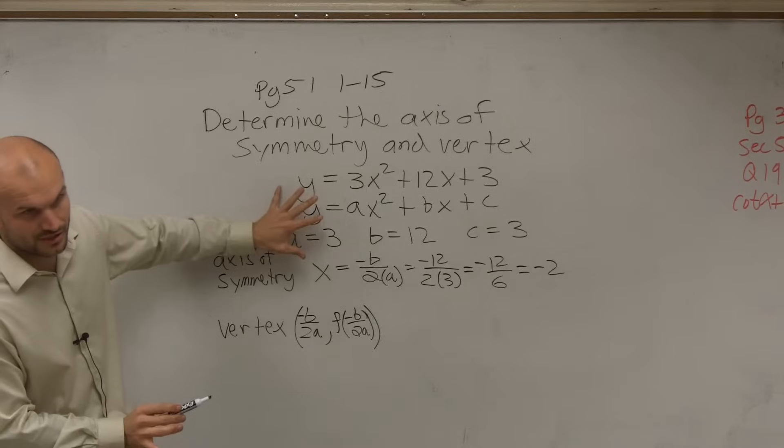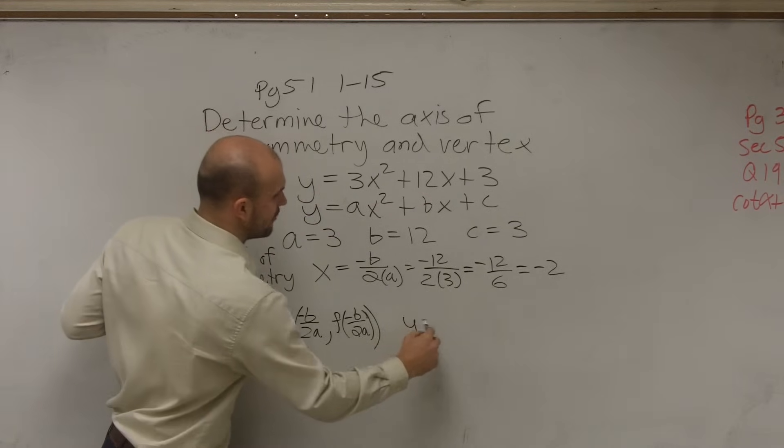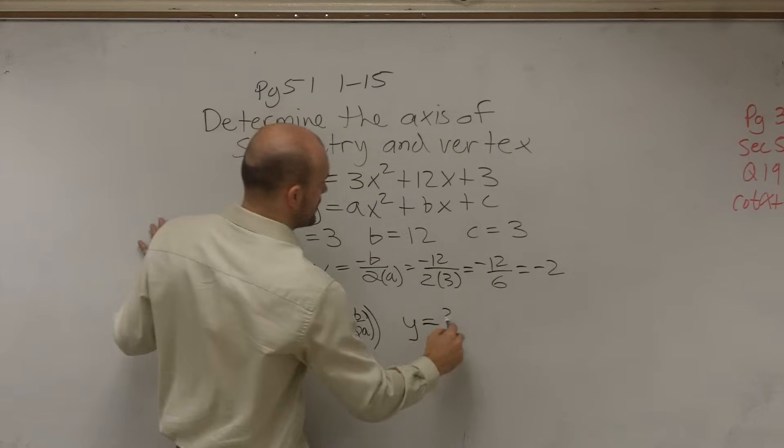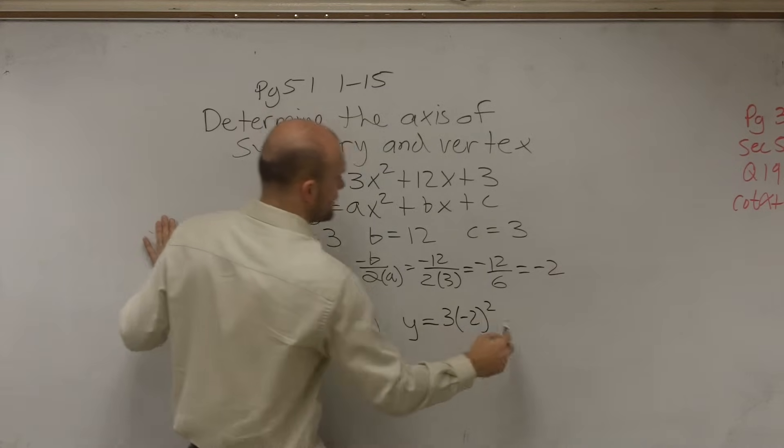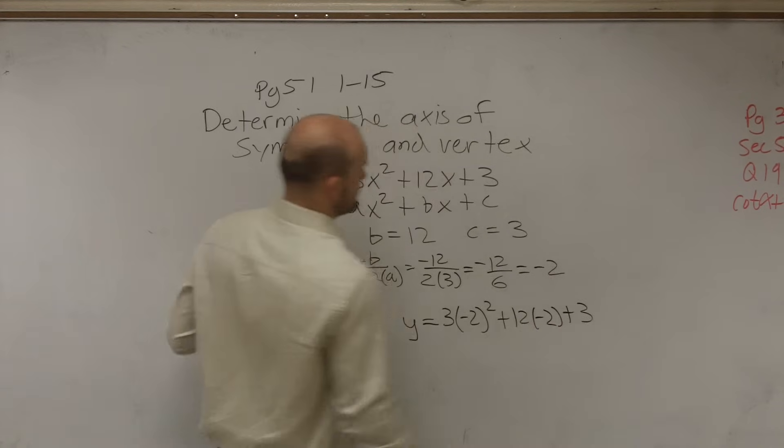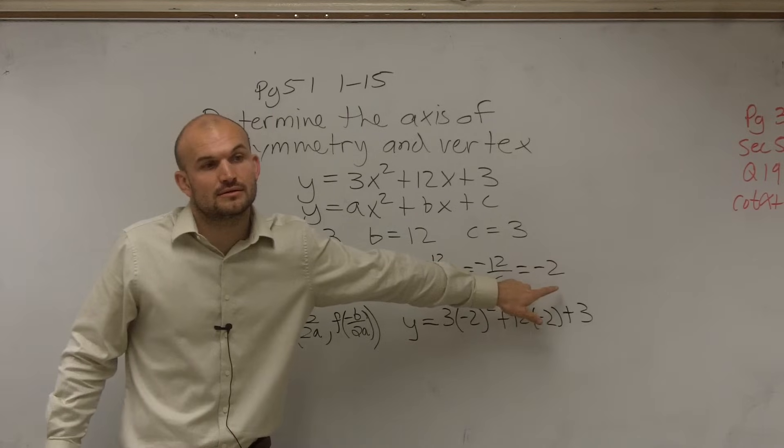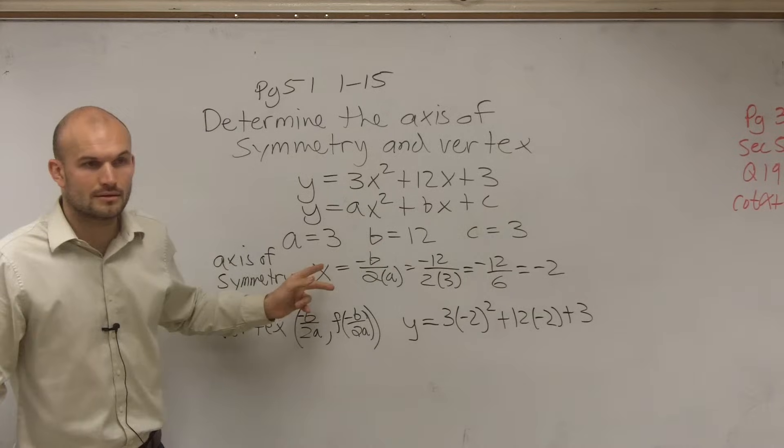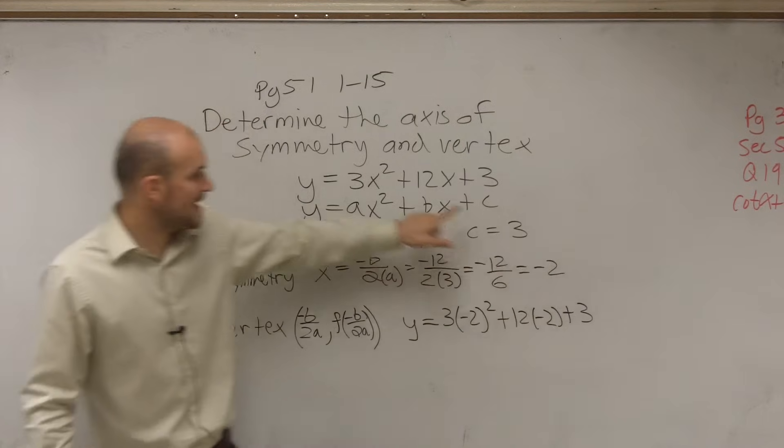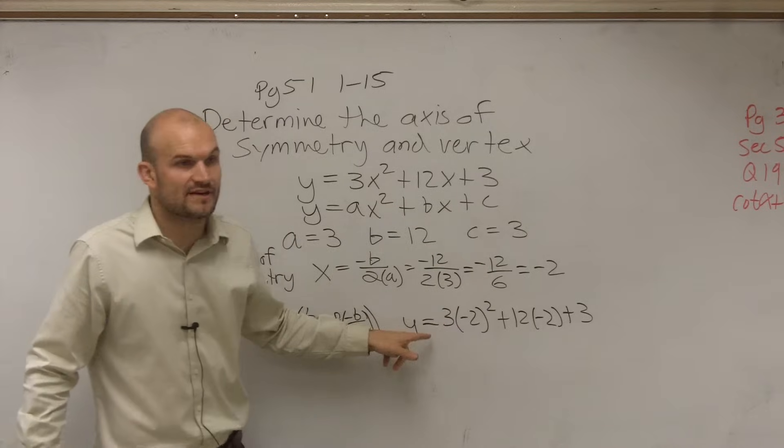All you, we're not dealing with a function. We're actually just dealing with an equation. But what you're going to do is simply just take your value for x and plug it into your equation. So I'll have 3 times negative 2 squared plus 12 times negative 2 plus 3. And here's where negative 2 is your value of x, right? So remember, we found the axis of symmetry, which x equals negative 2. So then what we do is we plug negative 2 in for x to find our y value.